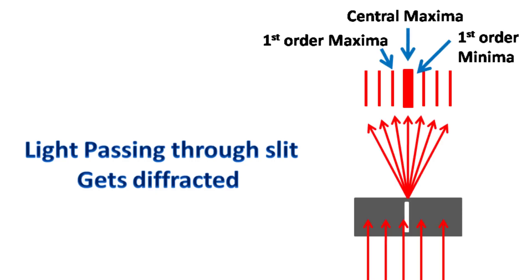For example, when light passes through a slit, it gets diffracted. What you see is a central maxima, first order minima, first order maxima and so on.